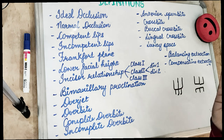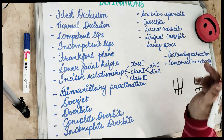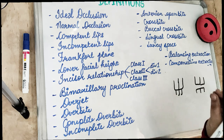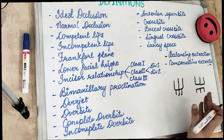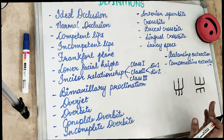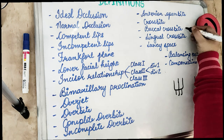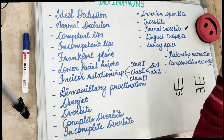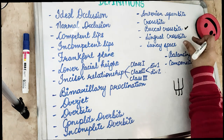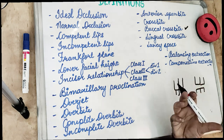Crossbite is when the bite is crossed. Normally, maxillary teeth are buccal and mandibular teeth are slightly lingual. A buccal crossbite is when the buccal cusp of the lower molars or premolars occludes buccal to the buccal cusp of the upper molars. A lingual crossbite is the opposite — the buccal cusp of the lower teeth are lingual to the lingual cusp of the upper teeth.